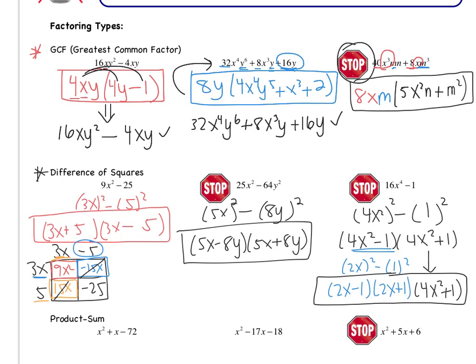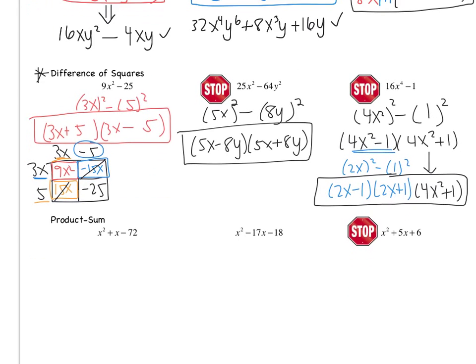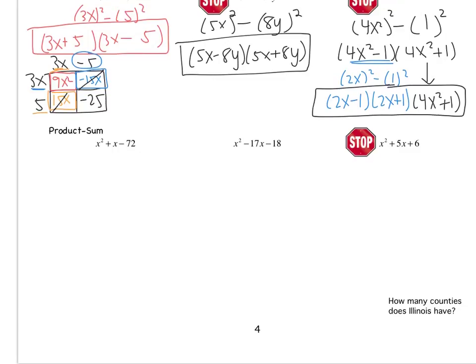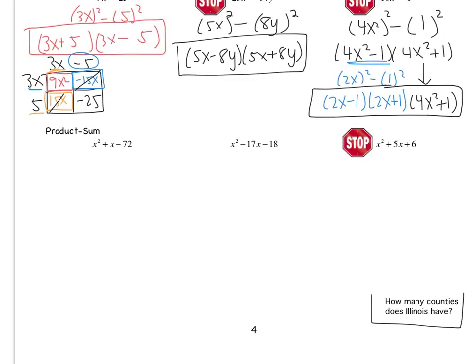Okay, so those are the first two types of factoring. The last one is called product sum. So before we do the last one, here's your quick trivia for the video. How many counties does Illinois have? So we live in Cook County. How many counties in total does Illinois have? After we go through the next three examples, I'll reveal the answer.